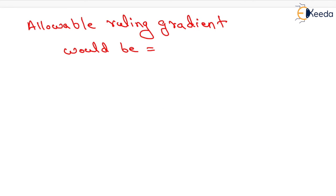So allowable ruling gradient would be 1 in 197. That will be the complete solution of this numerical. Thank you very much, students.